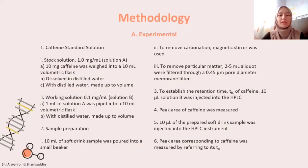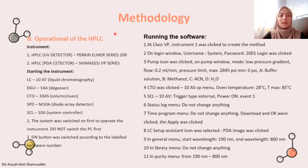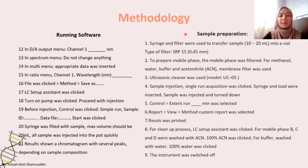Next is the methodology for the HPLC experiment. There are two parts: Part A and Part B. In Part A, the method goes from caffeine standard solution preparation to sample preparation until obtaining the retention time result for caffeine. In Part B, the operation of HPLC, the instrument used is shown along with precautions before starting the instrument. There are two sub-methods: running the software and sample preparation. All methods were performed carefully to prevent any incidents and to ensure accurate results.